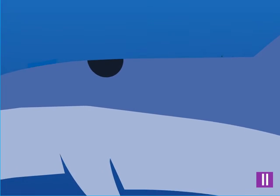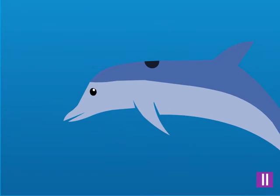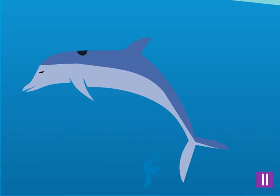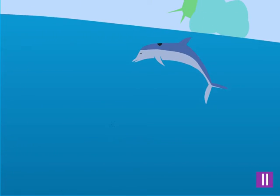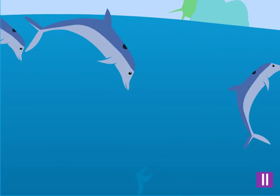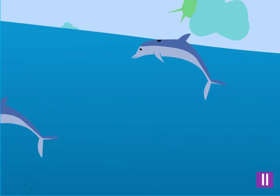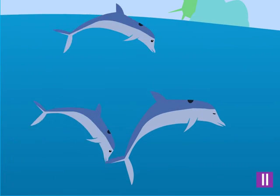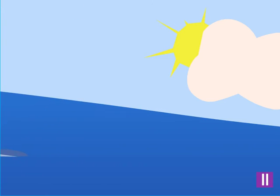Another animal that needs protection and uses a blow hole to breathe are dolphins. Dolphins are some of the smartest animals in the world. They may look like fish, but they are not fish. Just like whales, dolphins cannot breathe under the water and use blow holes in the top of their bodies to breathe. Dolphins are very friendly and playful animals and they like to jump out of the water and swim very fast.